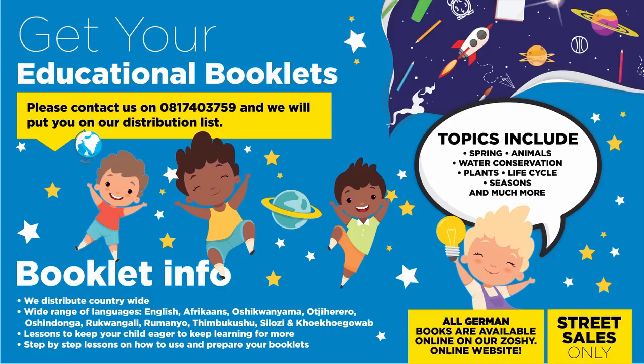Do you have children in the age range of 5 to 6 years and want to participate in our school booklet program? Please contact us on 081-74-3759 and we will put you on our distribution list for the attention of pre-primary schools. Topics include family, summer, culture, traditions and houses, transport and communications, occupations, autumn and more. We distribute countrywide in over 10 different languages.